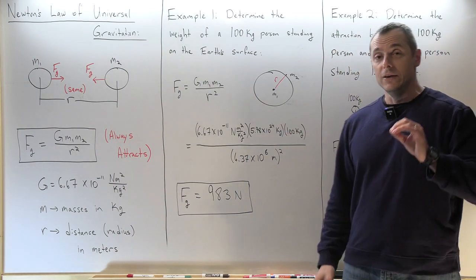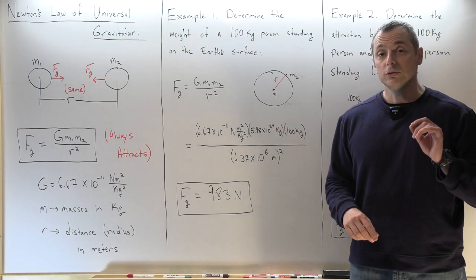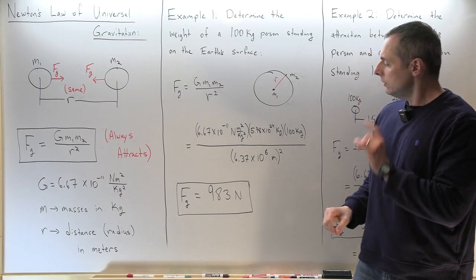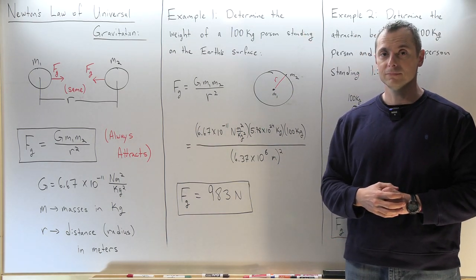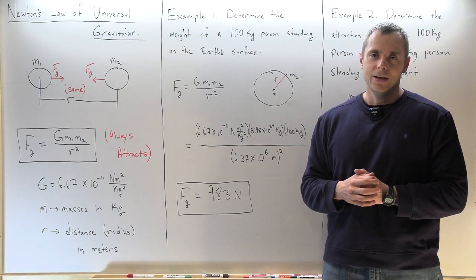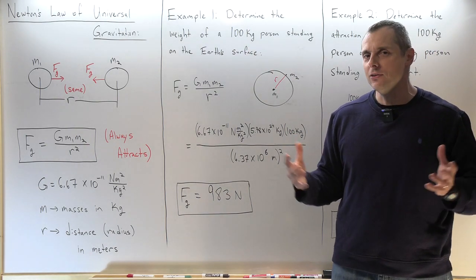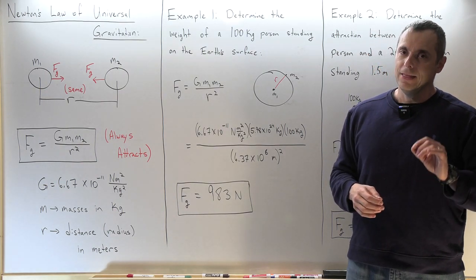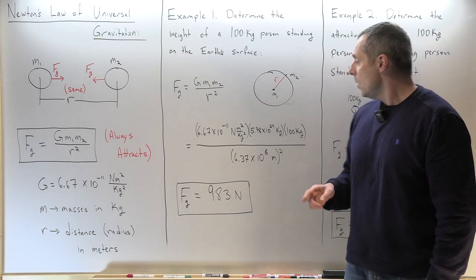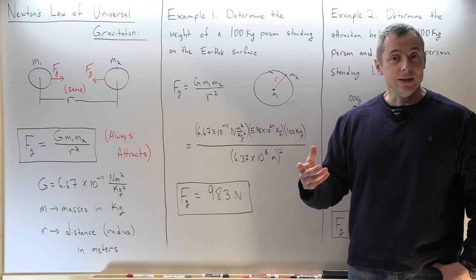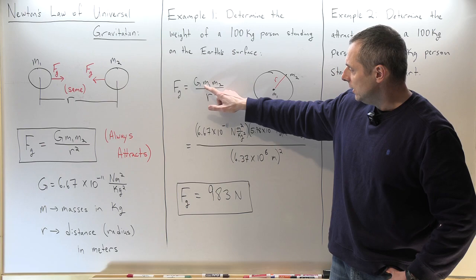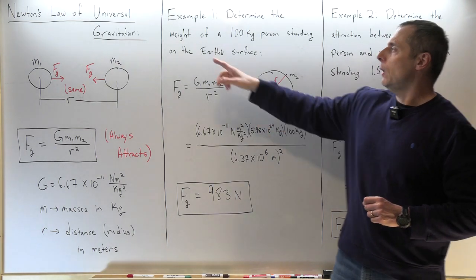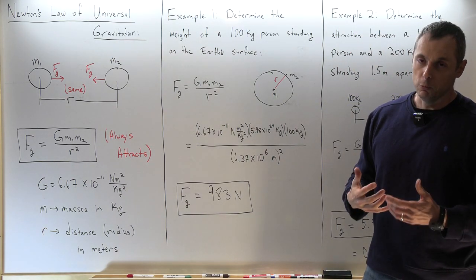You might notice 983 and wonder: couldn't I just do 100 times 9.8 and get 980? Yes, but that only works when you're standing on the surface of the Earth. What if you're on the Moon or Jupiter? You can't use m times 9.8 anymore. You can put in the mass of any planet, the mass of any person, the radius of any planet, and you'll get the force of gravity. That's why we say it's universal — it works everywhere with all objects, not just Earth.